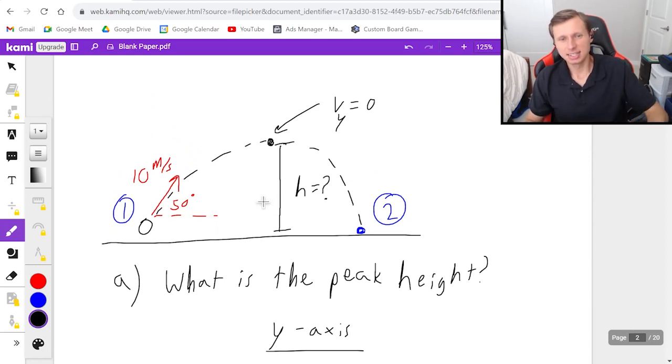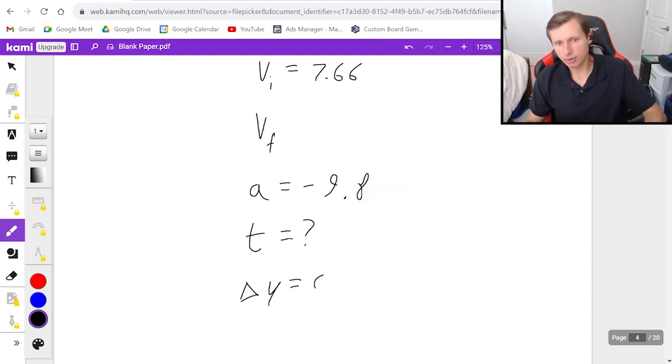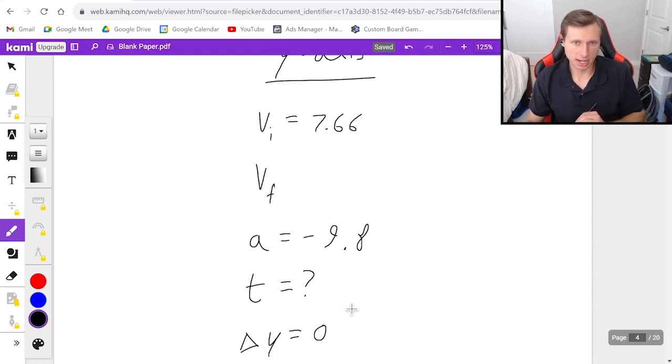The answer is delta y is the final height, which is right there, minus the initial height, which is right there. In other words, we're starting where we ended. The delta y is zero. The change in height is zero, because we're not talking about the height in the middle. That was for another problem. So since delta y is zero, it means I do have three of the five, and I can solve for time.